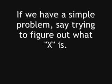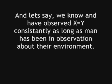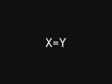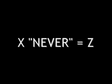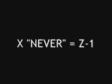If we have a simple problem, say trying to figure out what X is, and let's say we know and have observed X to equal Y consistently, as long as man has been observing their environment — X has always equaled Y. And let's say we know and have observed X to never equal Z. As long as man has been observing their environment, X has never equaled Z. And no matter what you add or subtract to Z, it never will equal X.